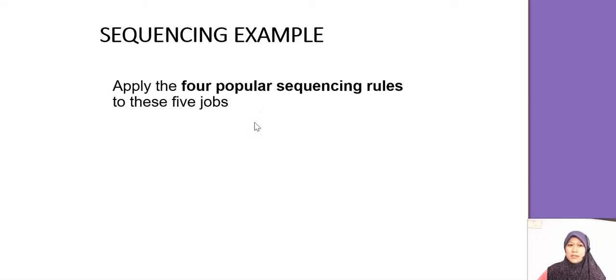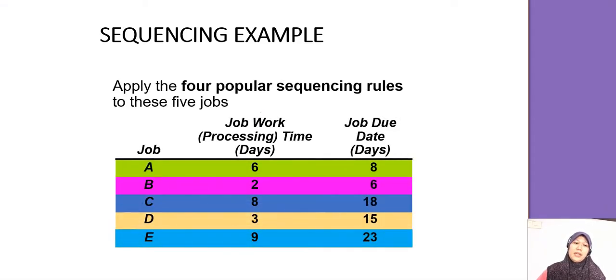What is the criteria that they look when they want to choose which one is the best rule? First they look at the average completion time, utilization, and then also is there any job lateness if a due date is very important for your industry. So let's look at this example. They have 5 jobs: A, B, C, D, E. And these are the processing time for each job. So in days. This is maybe a long process. So job A takes 6 days to complete, job B 2 days, job C 8 days, and so on. And these are the due dates.